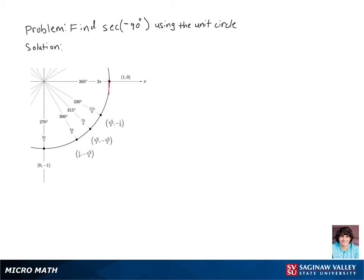Let's find secant of negative 90 degrees using the unit circle. We're going to rotate 90 degrees counterclockwise on the unit circle since we're dealing with a negative number. Now secant is just 1 over cosine, so secant of negative 90 degrees is equal to 1 over 0.